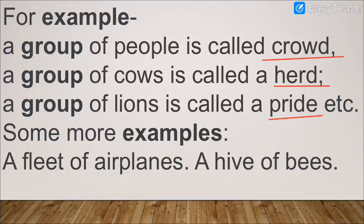A fleet of airplanes — when so many airplanes are flying in the sky together, they are called fleet of airplanes. A hive of bees — when you see so many honeybees all together, it is called a hive of bees. We get honey from honeybees, which is very sweet. So collective nouns we saw: crowd, herd, pride, fleet, hive — these are all collective nouns.